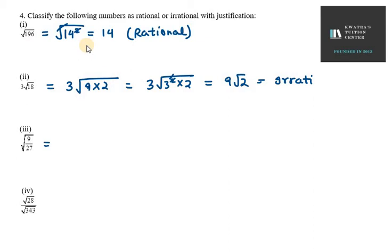Now the third one is 9 over 27. This can be simplified to 1 over 3, which will be an irrational number.